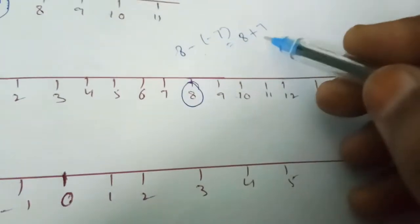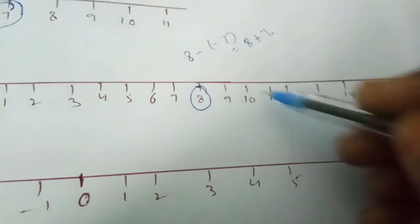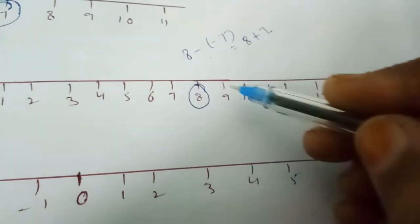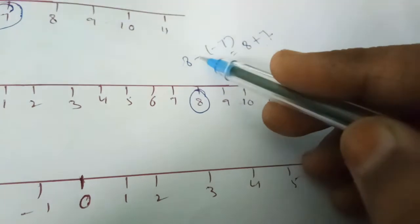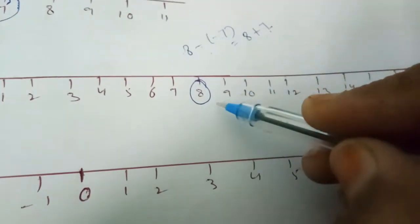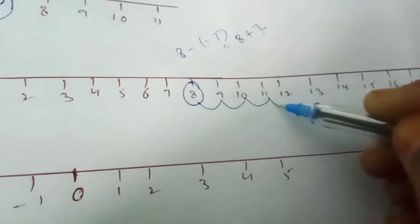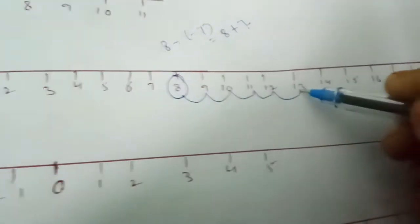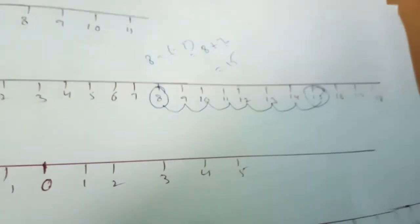So now we have to add 7 because of the rule of integers — minus into minus is plus. So we have to move on the right side 7 times: 1, 2, 3, 4, 5, 6, 7. So 15 is our answer.